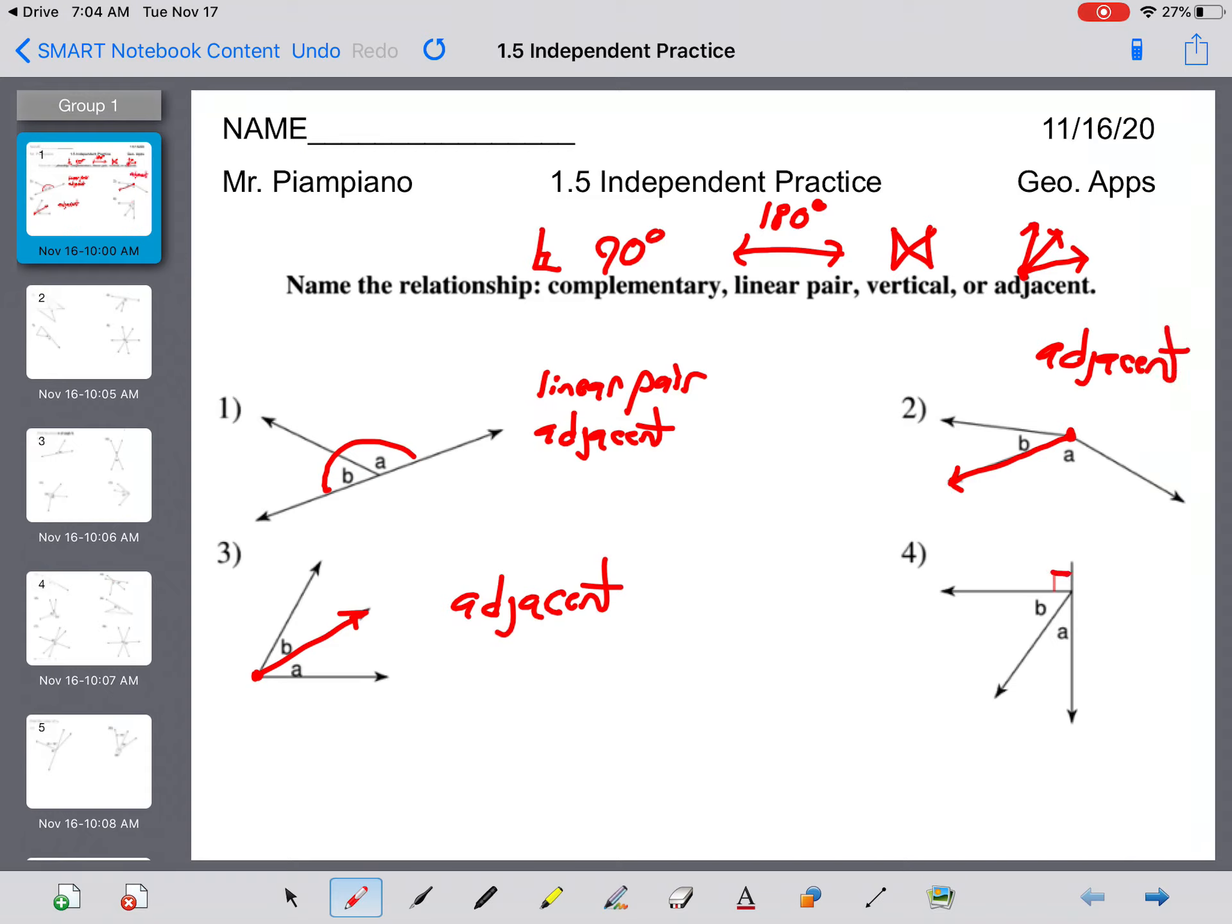And four, you have your box here showing your right angle. So this is complementary. And they're also adjacent.